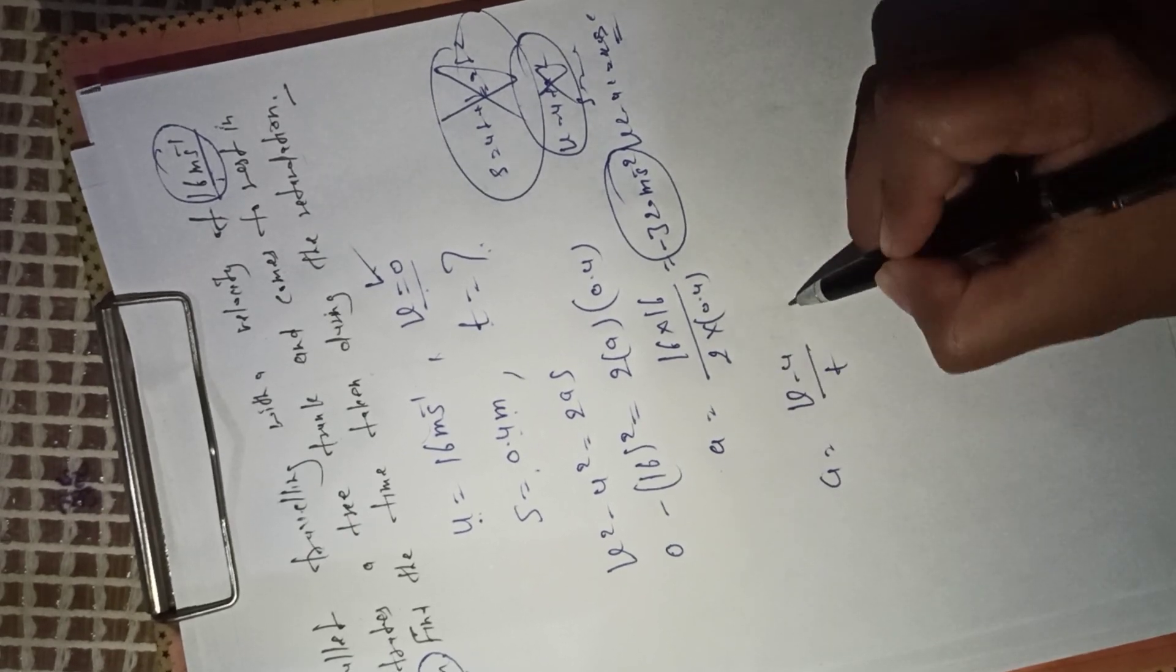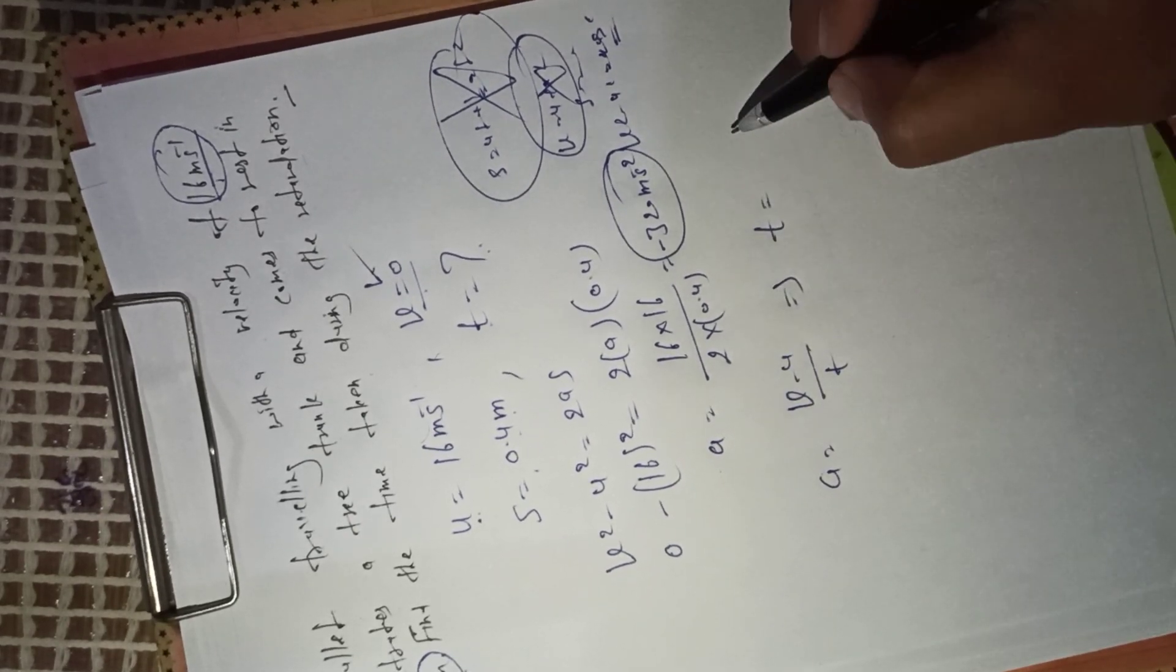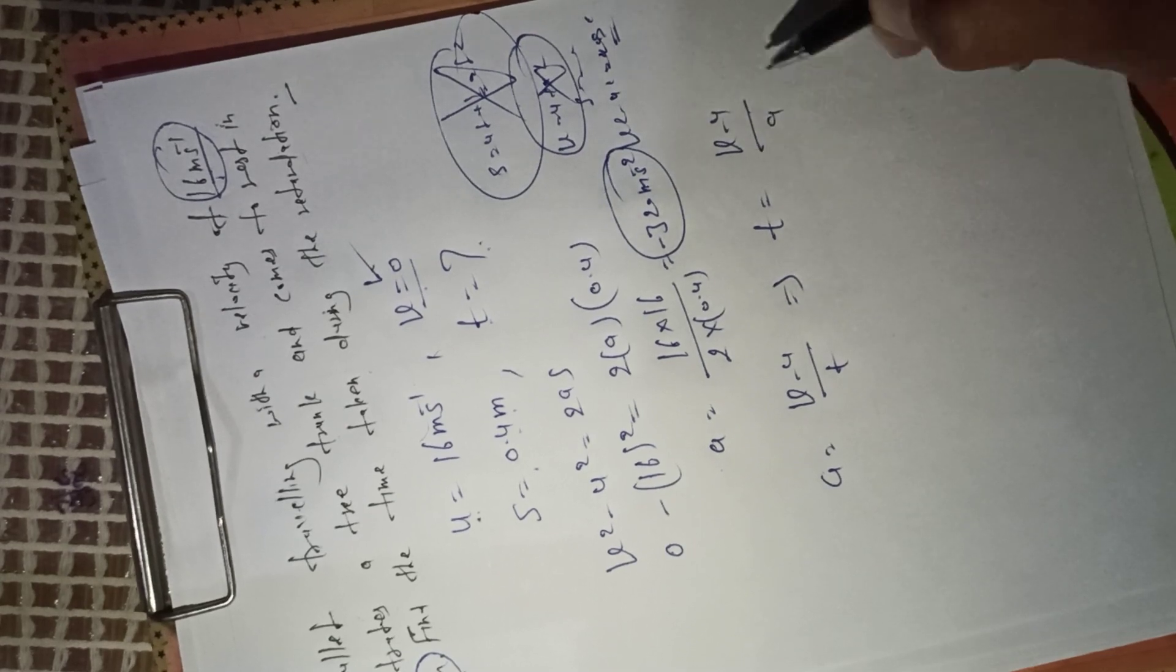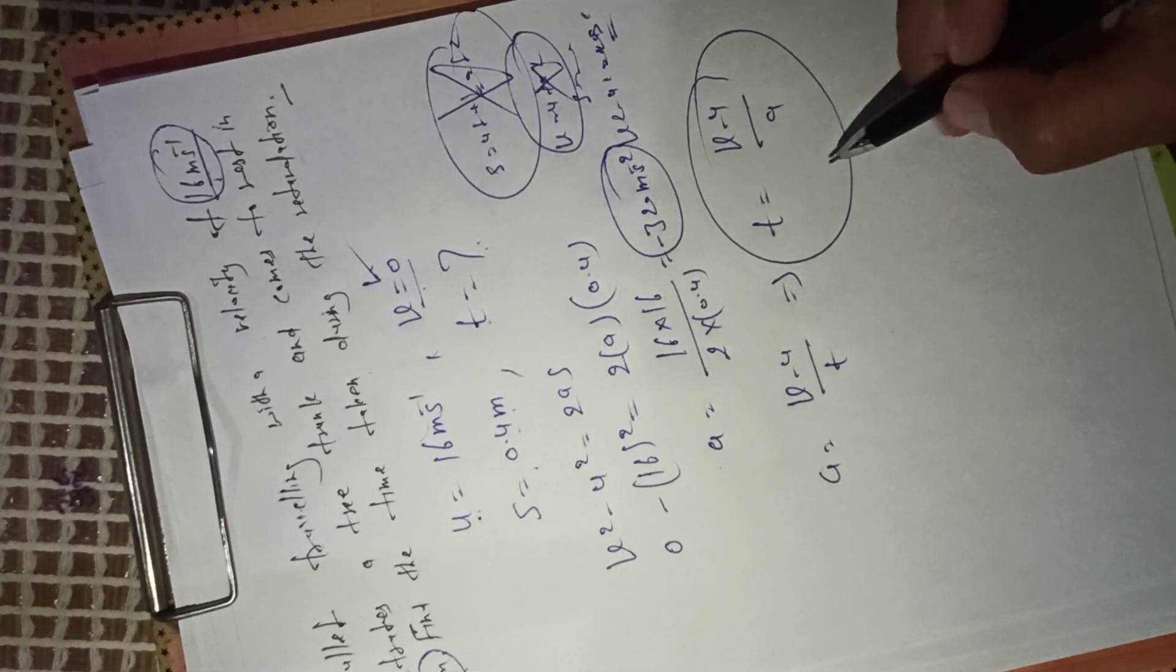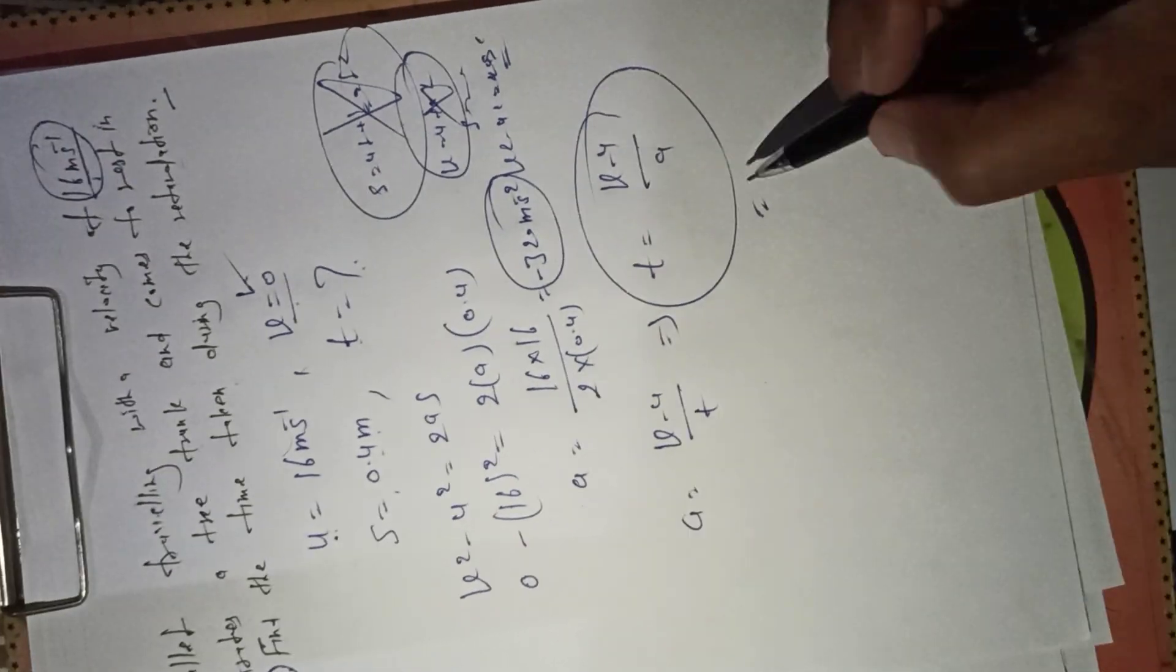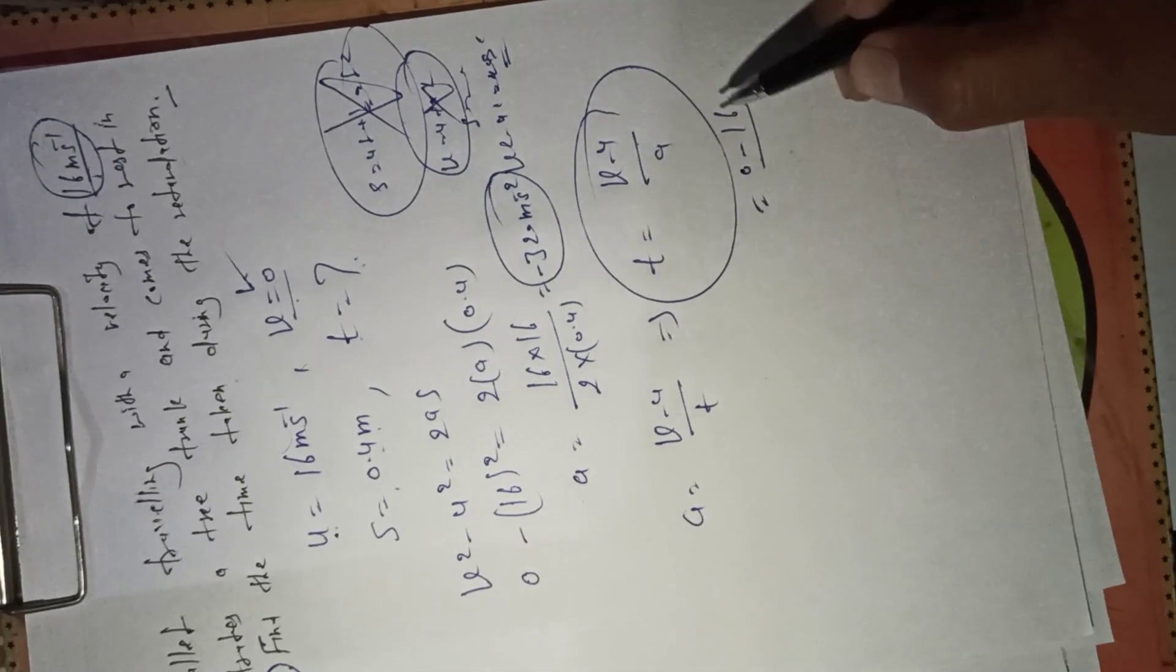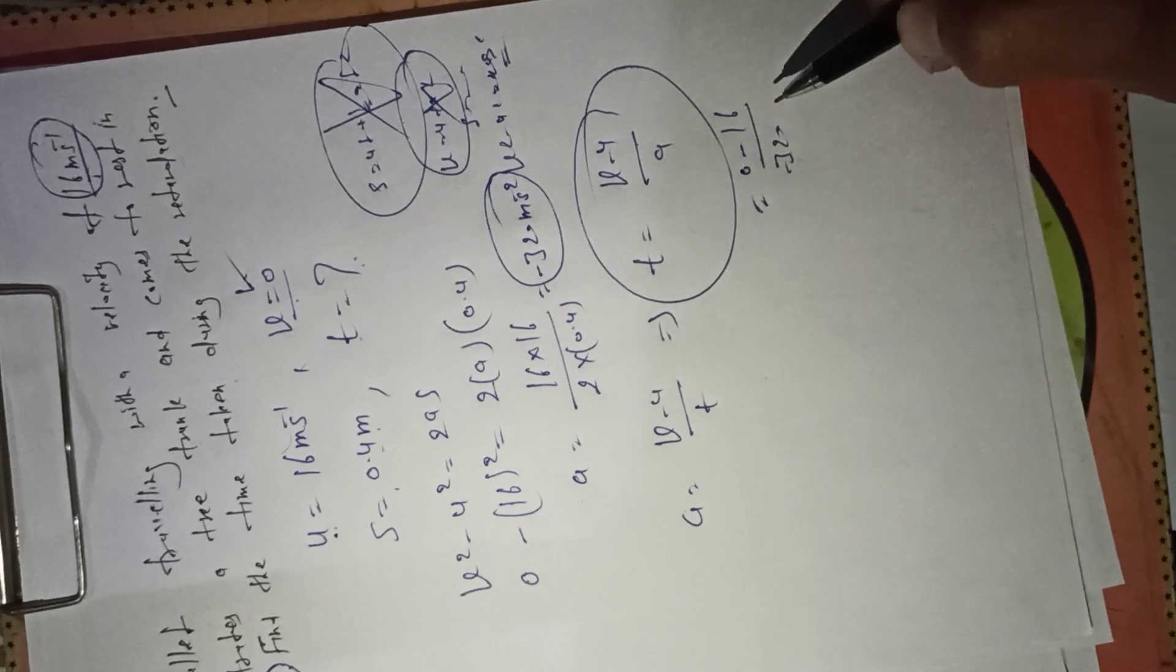v minus u upon t, or t equals v minus u upon a. So here we calculate the value of v. v is 0 minus 16 upon a, where a is 320.